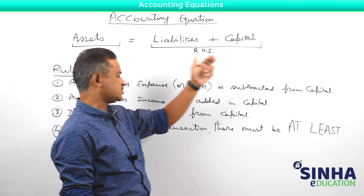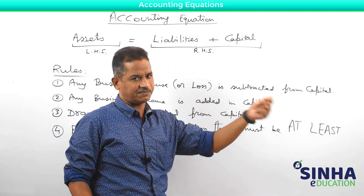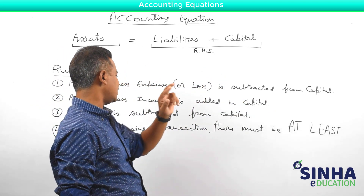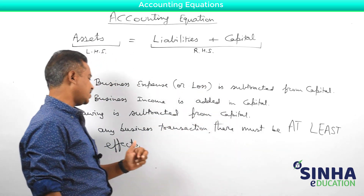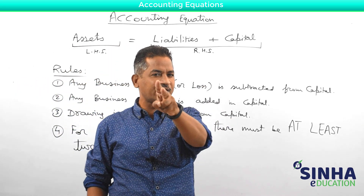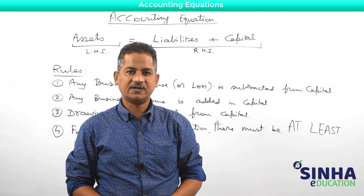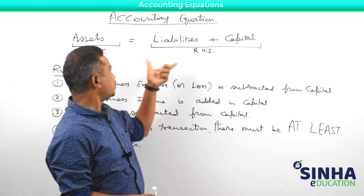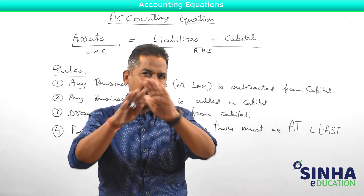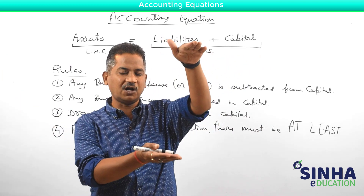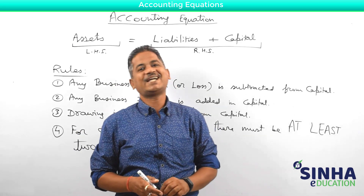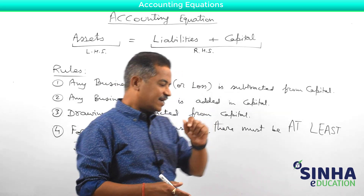To summarize: any business expense is subtracted from capital, any business loss is subtracted from capital, any business income is added to capital, drawing is subtracted from capital, and there must be at least two effects for each and every transaction. All these rules are used to certify the universal truth that for any business, the sum total of all assets must always equal the sum total of liabilities plus capital.